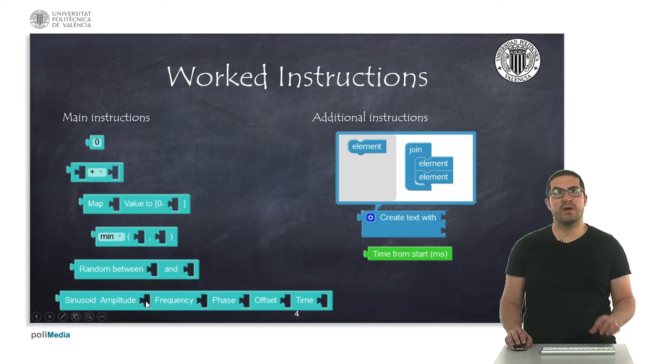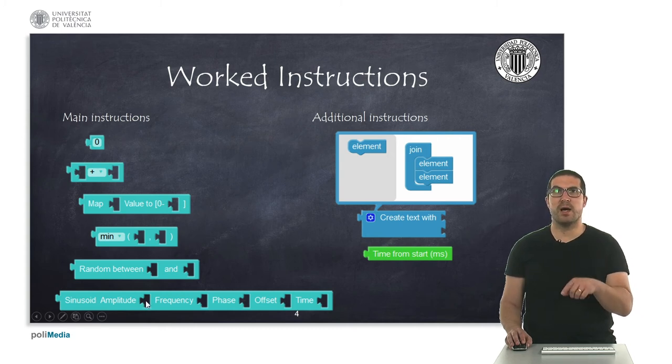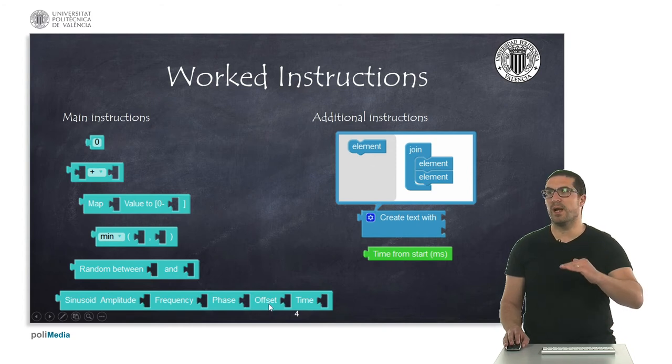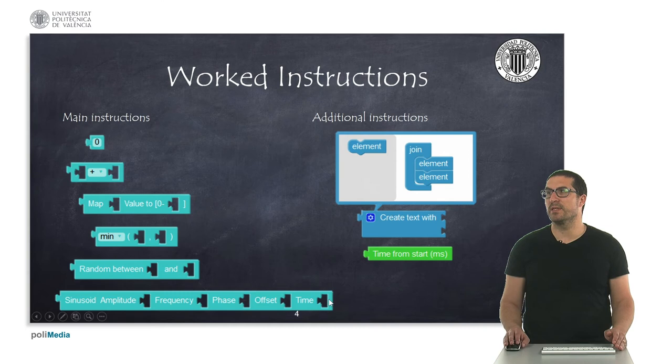We have to specify the amplitude, we have to specify the frequency, that's how many times it's repeated on every second. We have to specify the phase, which is the initial angle, and the offset, which is the mean value, and the current time.